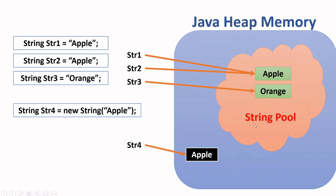One apple is in the string pool and one is in the heap. So if we were to compare str4 and str1, asking if they're equal, the answer is false. They are not equal because they do not point at the same value. Even though both values are apple, physically they are not the same. Therefore, str4 and str1 don't reference the same value.